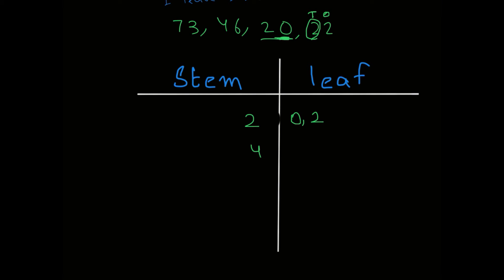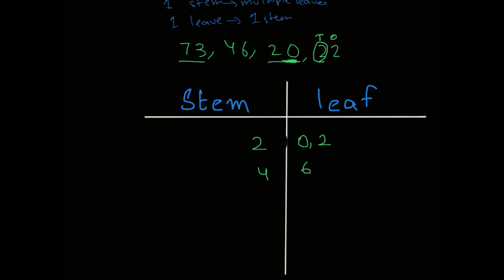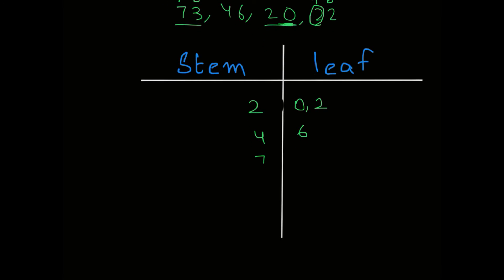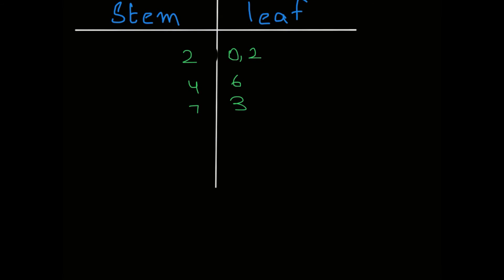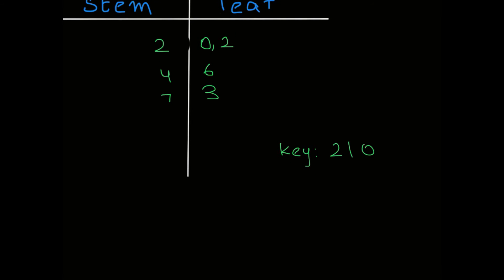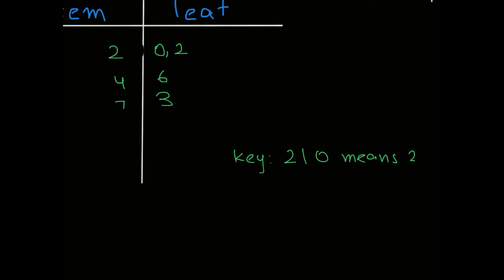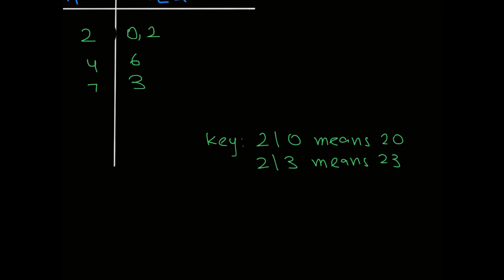For 46, the tens digit 4 goes in the stem section and the ones digit 6 goes in the leaf section. For 73, the tens digit 7 goes in the stem and the ones digit 3 goes in the leaf. We also need to make a key — for example, 2|0 means 20, and 2|3 would mean 23 for this particular diagram. You only need to write one key entry, so '2|0 means 20' is sufficient.